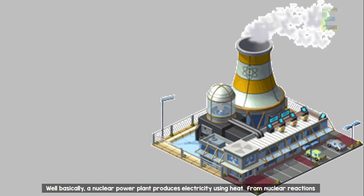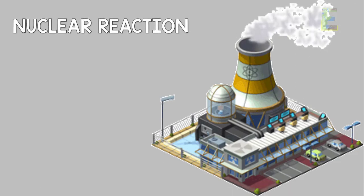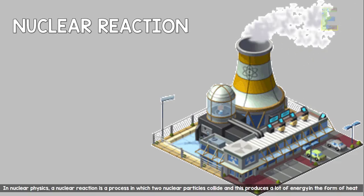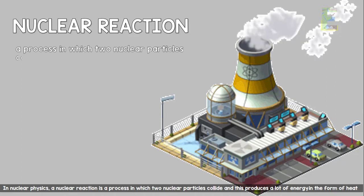Well basically, a nuclear power plant produces electricity using heat from nuclear reactions. In nuclear physics, a nuclear reaction is a process in which two nuclear particles collide.